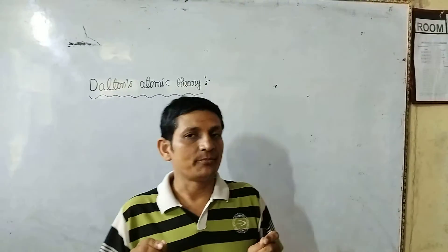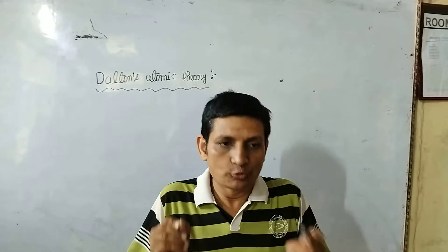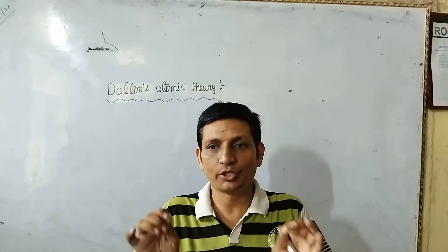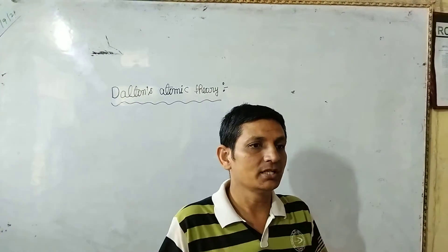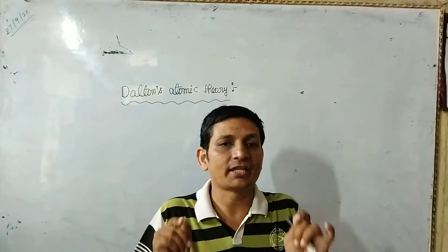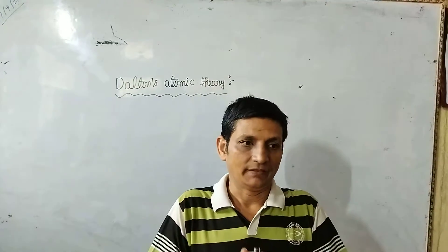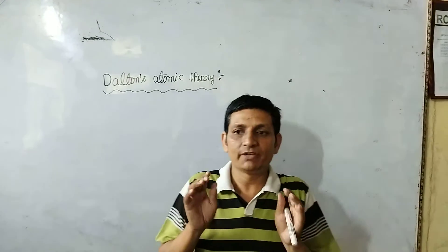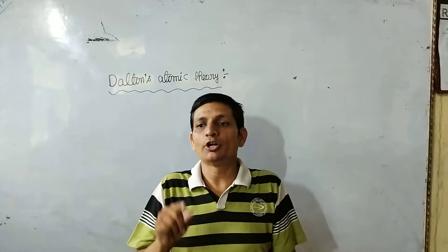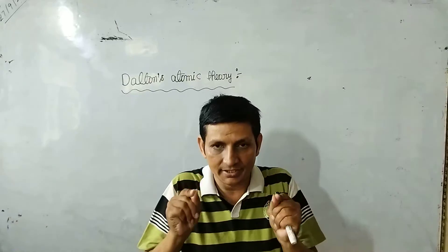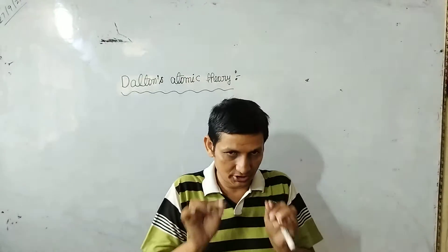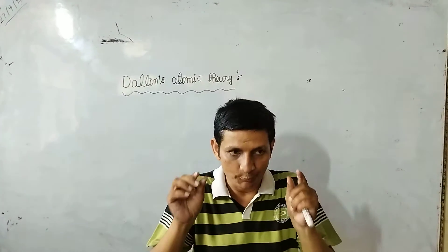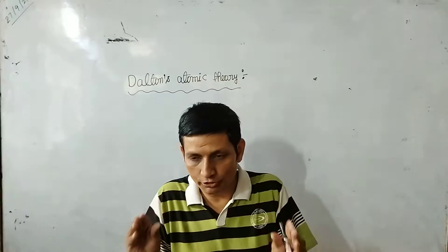Hello students. I am Shivam Sukla. Today I am telling you Dalton's Atomic Theory in chapter Structure of Atom and Chemical Bonding. The first scientific theory was given by John Dalton in 1808 about the structure of matter. The main points or postulates of Dalton's Atomic Theory are as follows.